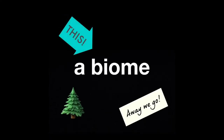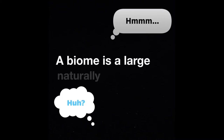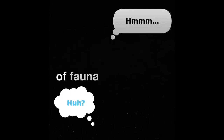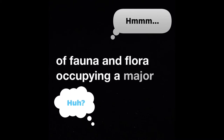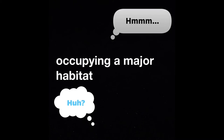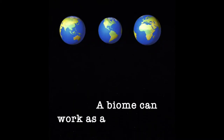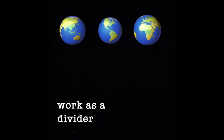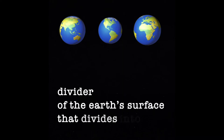What is a biome? A biome is a large naturally occurring community of fauna and flora occupying a major habitat. A biome can work as a divider of the earth's surface that divides into different climates, soil types, plants and animals.